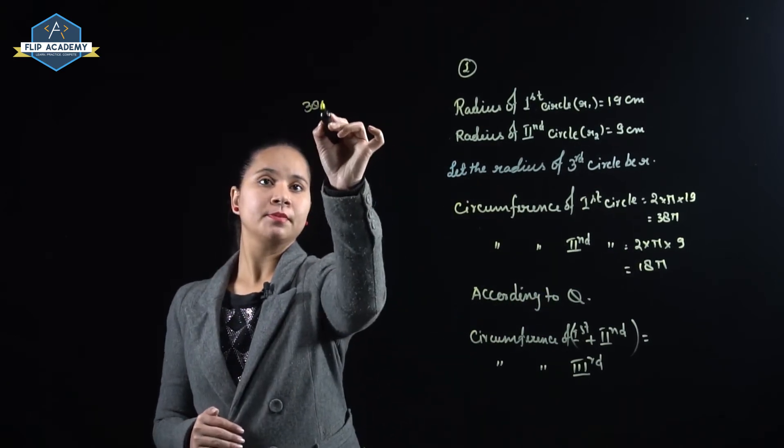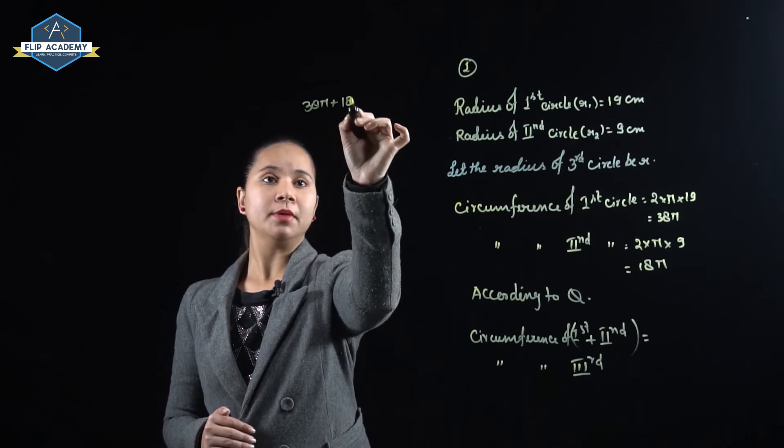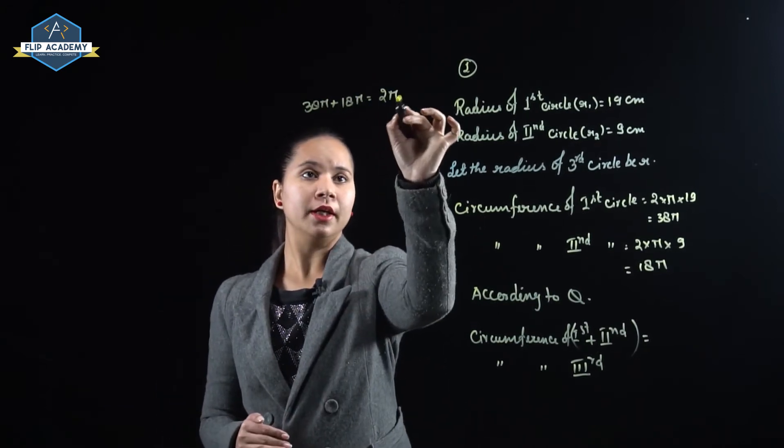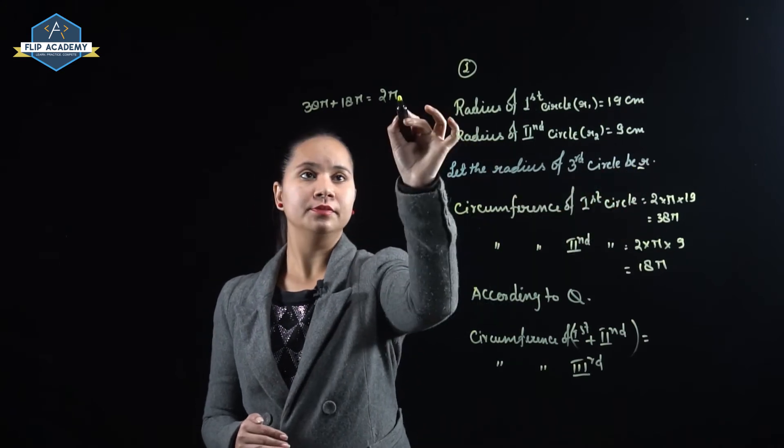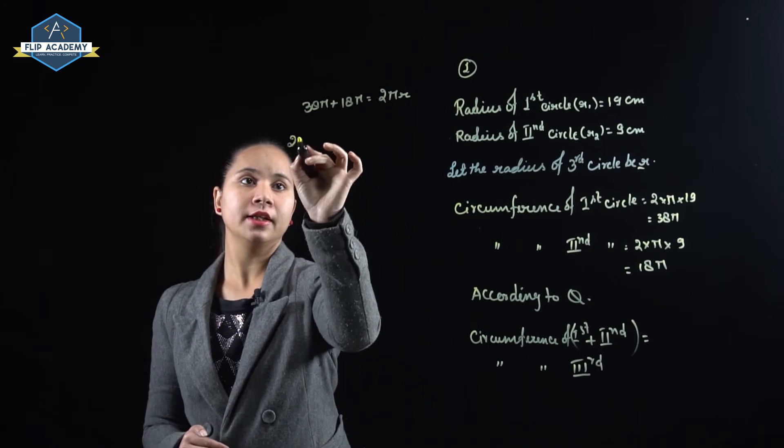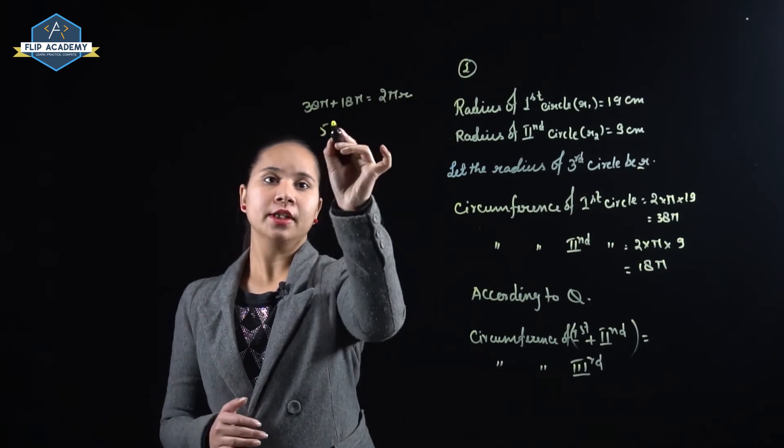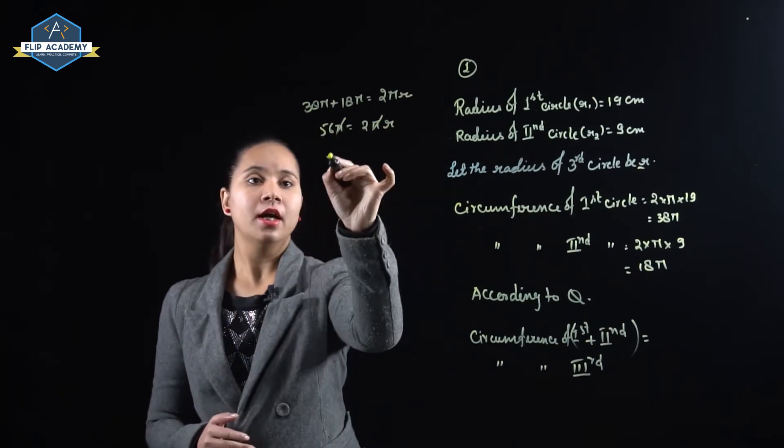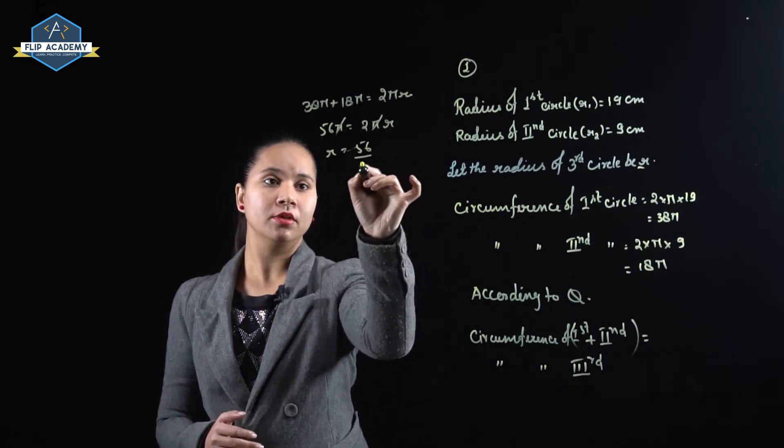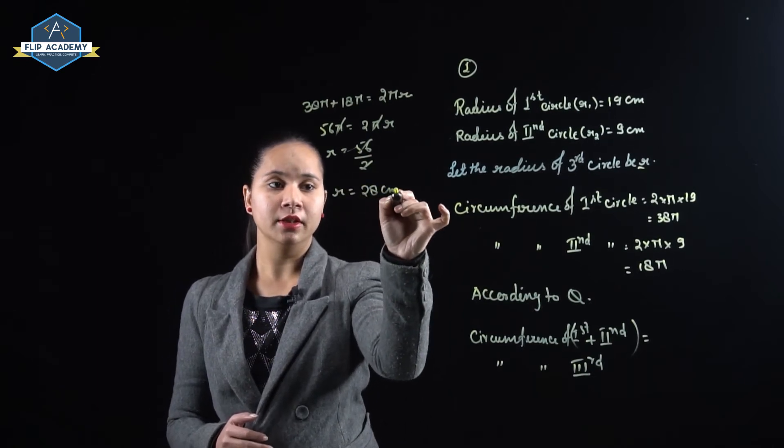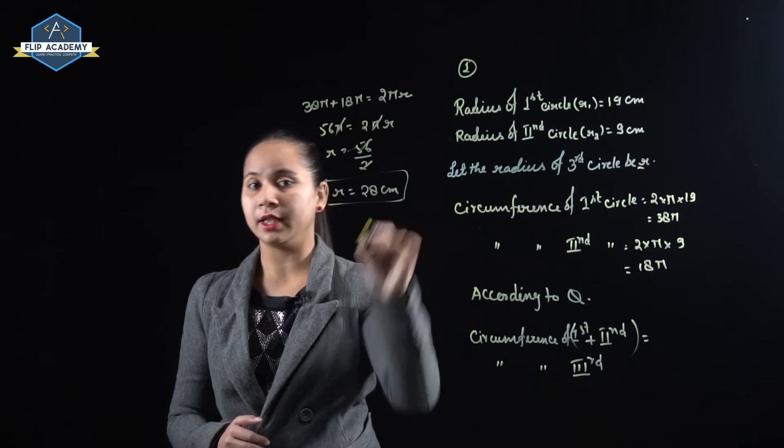That is equal to 38 pi plus 18 pi is equal to 2 pi r. We can take 2 pi common. So we get 56 pi is equal to 2 pi r. Pi cancels with pi and r is equal to 56 upon 2. Dividing, r is equal to 28 cm. So the radius of the third circle is equal to 28 cm.